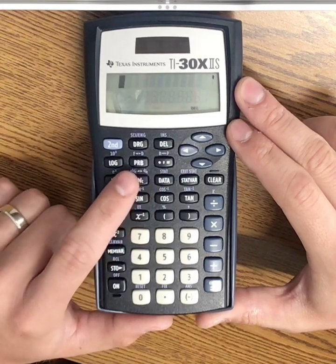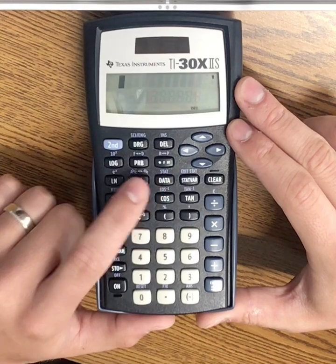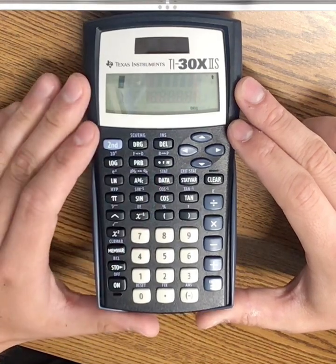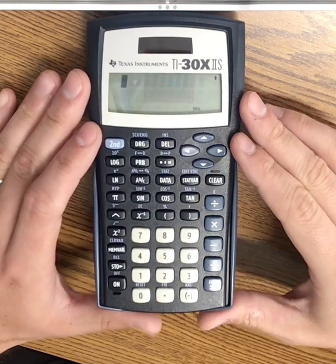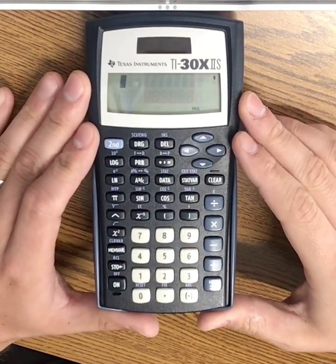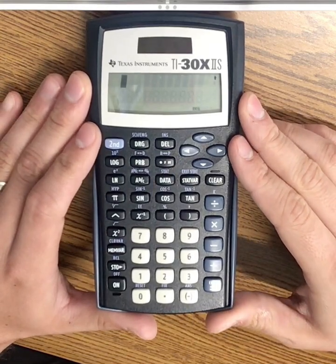So this will take a mixed number and make it improper, or vice versa. To do this, you have to type in the fraction that you want to change first. For example, 1 and 3 fourths would become 7 fourths.